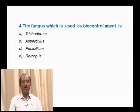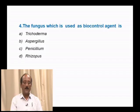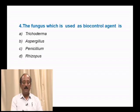Question number 4: The fungus used as a biocontrol agent is — Trichoderma, Aspergillus, Penicillium, Rhizopus. Among the four options, Aspergillus, Penicillium and Rhizopus are not commonly used as biocontrol agents. The most common fungus used to kill insect pests is Trichoderma. The correct answer is option A.